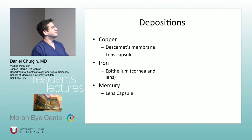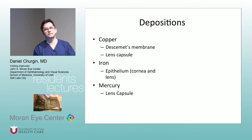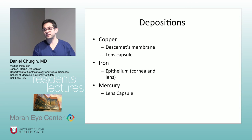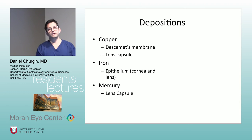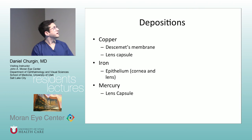Depositions — copper gets into Descemet's membrane and the lens capsule. Copper deposition in Descemet's membrane from systemic disease is Wilson's disease (hepatolenticular degeneration) — and the ring is the Kayser-Fleischer ring. You might also think of copper deposition in the lens capsule from an intraocular foreign body. Iron deposits in the epithelium. Mercury deposits in the lens capsule. If someone is presenting with a chronic IOFB, the location of deposition can help you determine what it's containing.